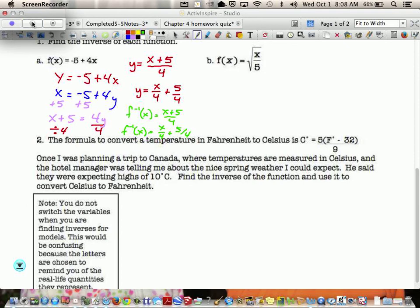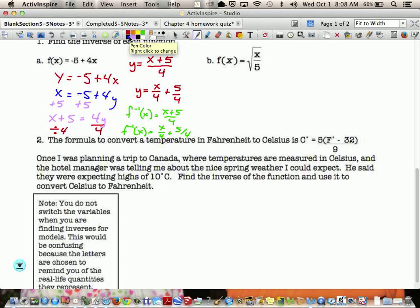So again, with this one, I would write it as y equals square root of x divided by 5. So after I rewrite it into the y equals notation, what's the first thing we should do? We should switch this to an x, switch that to a y.